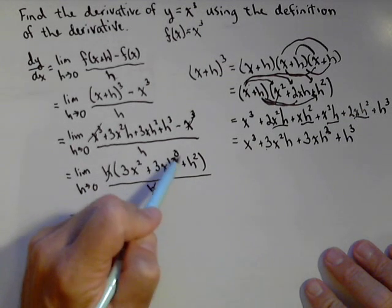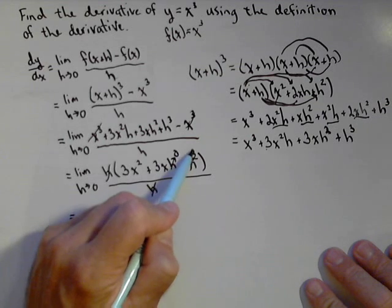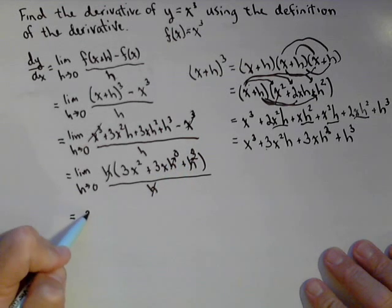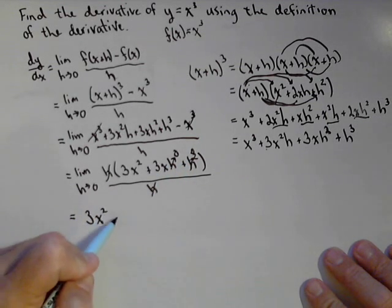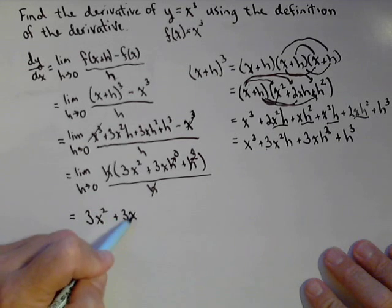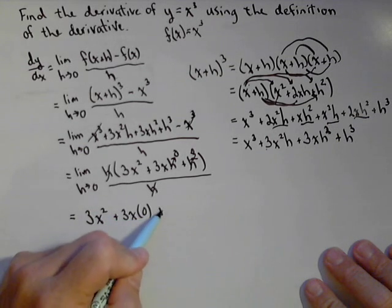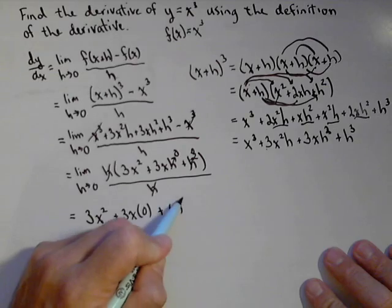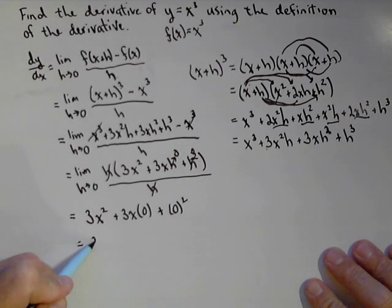So this h is going to become a zero, and so is this h. So what I'm going to get is three x squared plus three x times zero plus zero squared. Or that my derivative is simply three x squared.